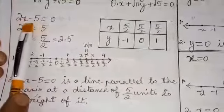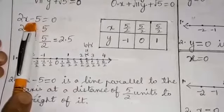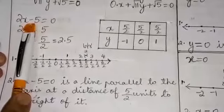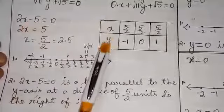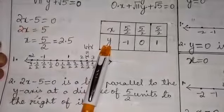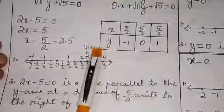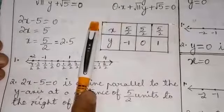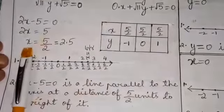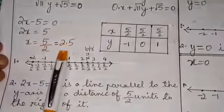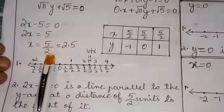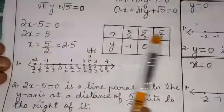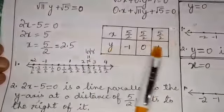Now we know that this equation can also be treated as a linear equation in two variables x and y. In that case, we need to make a table. Since on solving we have x is 2.5 or 5 by 2, x is always 5 by 2 for any value of y.